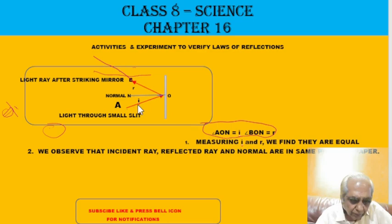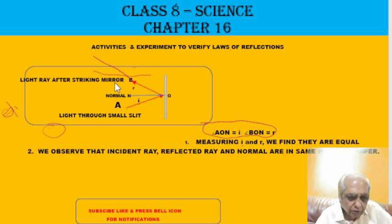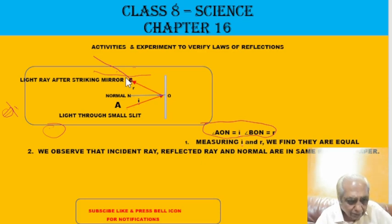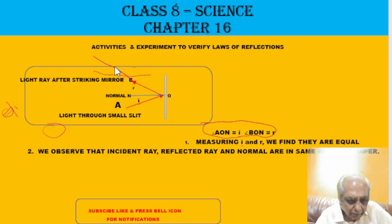To verify the second law, note that all three — incident ray, reflected ray, and normal — lie on the same paper. Now fold part of the paper up or down: you will find that the reflected ray does not appear on the folded portion, showing that the reflected ray cannot be in any other plane. When you bring the paper back to flat condition, the light ray extends along the full paper. This confirms that the incident ray, reflected ray, and normal are all in the same plane.